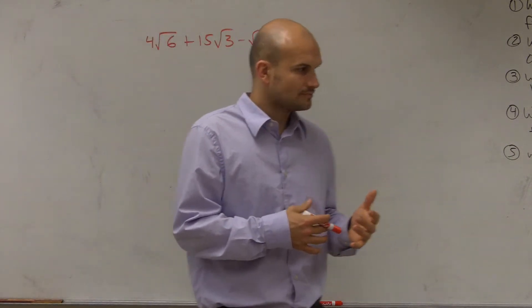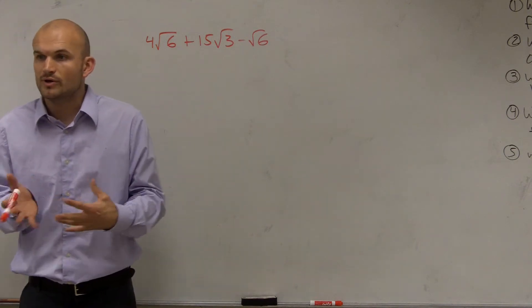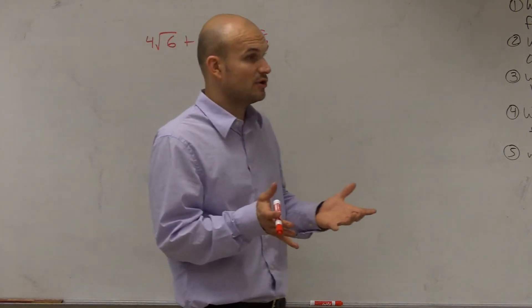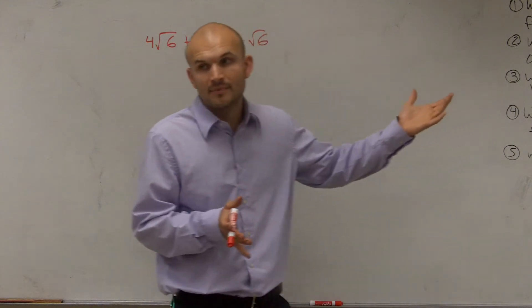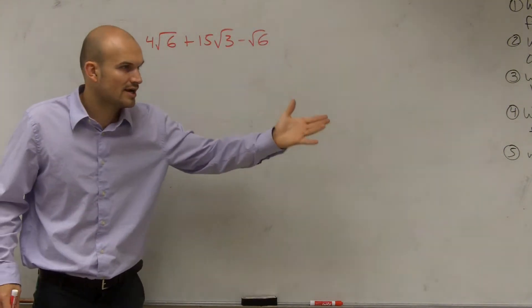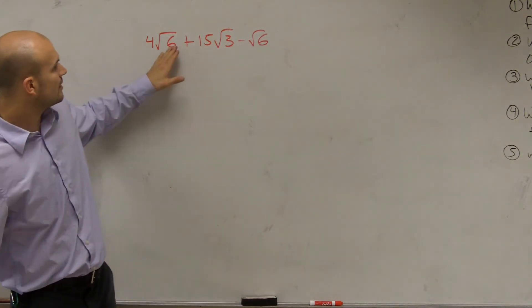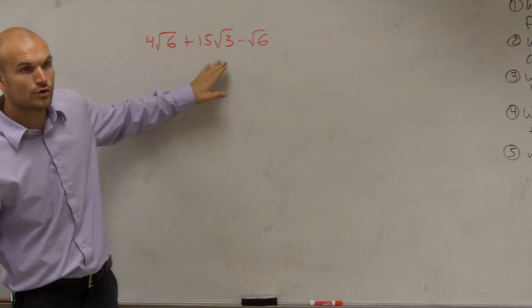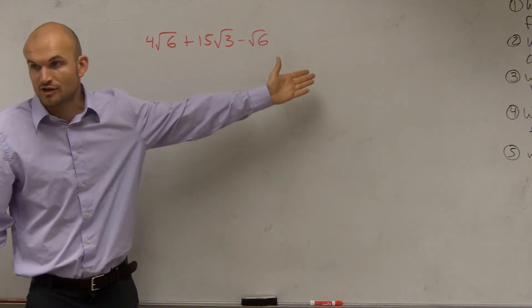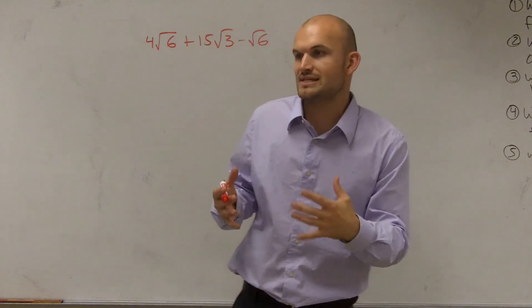Remember, when we're dealing with polynomials, we're dealing with numbers or variables that have an integer as their exponent. So we had like z squared and x to the fourth power. We could combine all those. Well, a radical or a root is actually a fractional power, so it's still going to use the same characteristics.